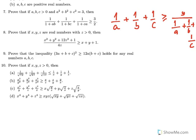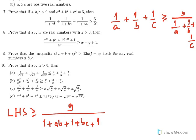We have a similar expression 1/(1+ab). Let me write the left-hand side directly: it is greater than or equal to 9 divided by the sum of the denominators 1+ab, 1+bc, plus 1+ca.